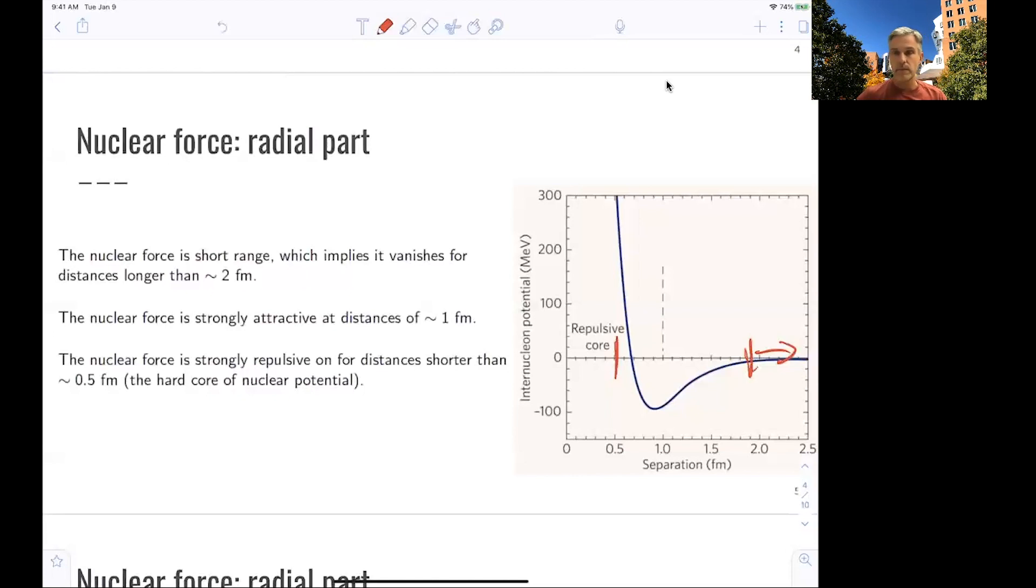You can understand the repulsiveness by the fact that you cannot really push or press an existing nucleon further than its actual radius. You cannot compress them further. This is also kind of apparent in the liquid drop model, where we discussed a volume term, and the volume cannot be compressed further.